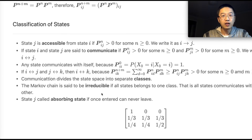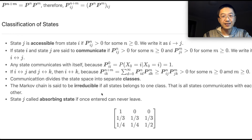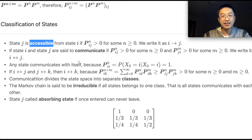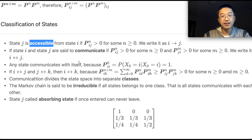Today we want to further investigate the various properties of the states in a Markov chain. States of a Markov chain can be classified by their characteristics. We say state j is accessible from state i if, for some n, the probability of reaching state j after n transitions is greater than zero.